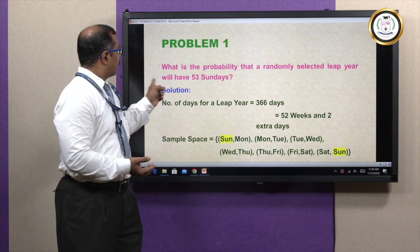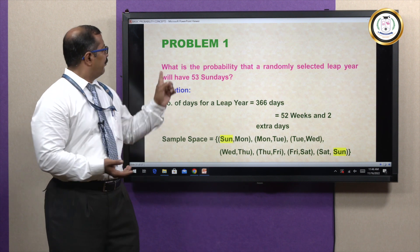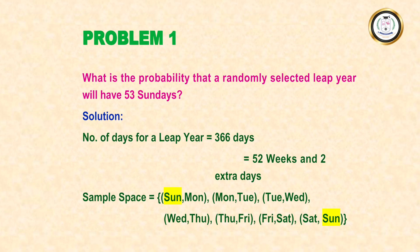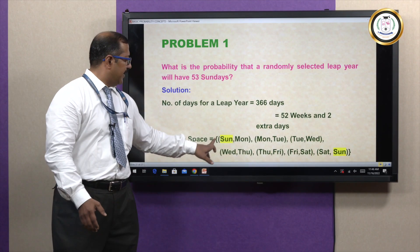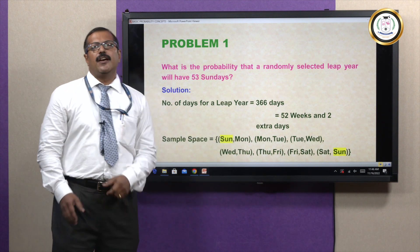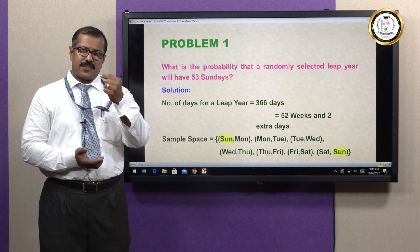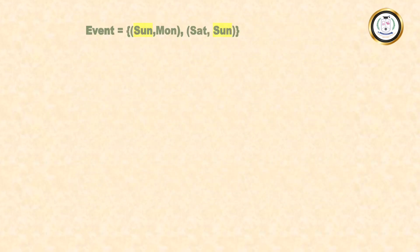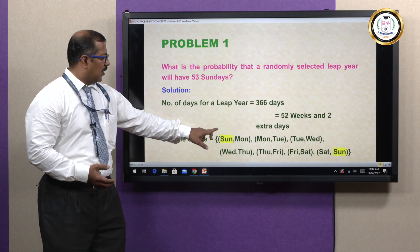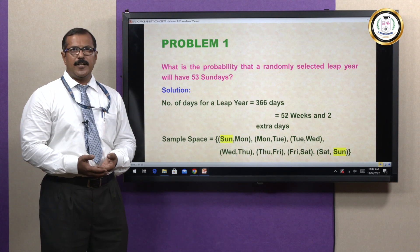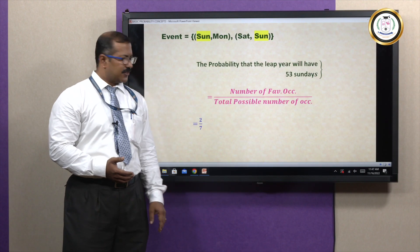What is the probability that a randomly selected leap year will have 53 Sundays? A leap year has 366 days. Out of 366 days, there are 52 weeks and two extra days. These two extra days can possibly be: Sunday-Monday, Monday-Tuesday, Tuesday-Wednesday, Wednesday-Thursday, Thursday-Friday, Friday-Saturday, or Saturday-Sunday. We want one extra Sunday, which is possible either with Sunday-Monday or Saturday-Sunday. So the favorable occurrences are 2 and the total occurrences are 7. Therefore, the probability is 2 by 7.